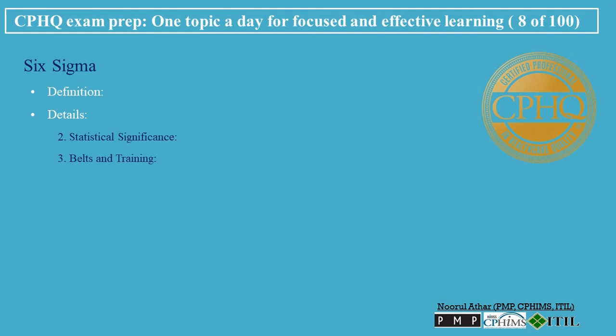Six Sigma adopts a martial arts-themed classification for its training programs. Practitioners can achieve different belt levels, such as green belt, black belt, and master black belt, each indicating a different level of expertise and responsibility within the Six Sigma framework.